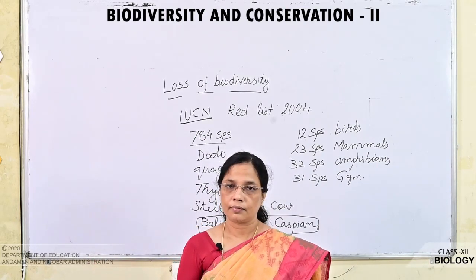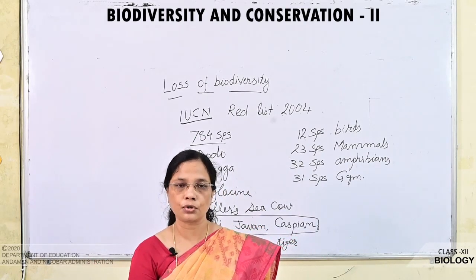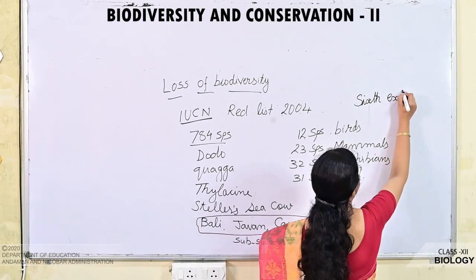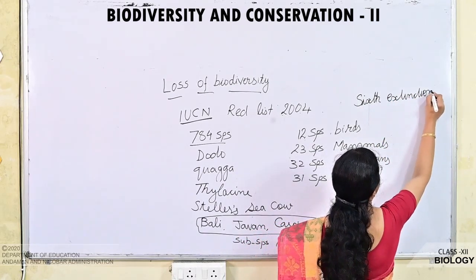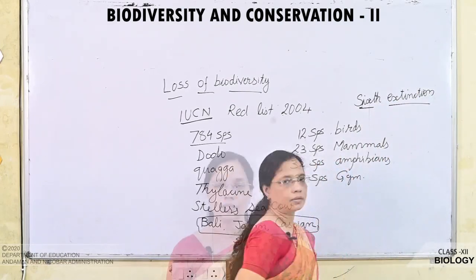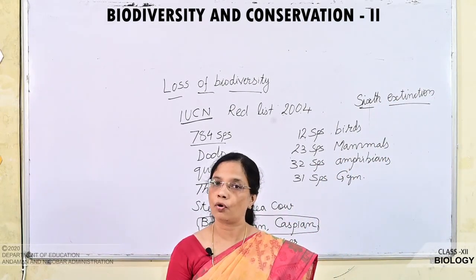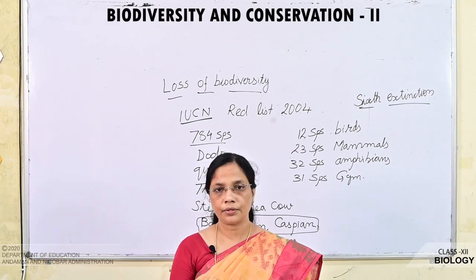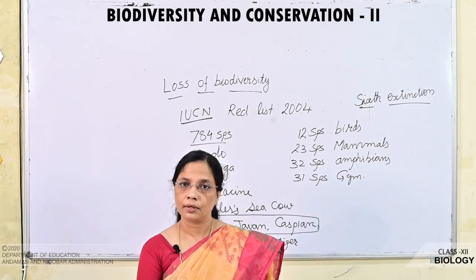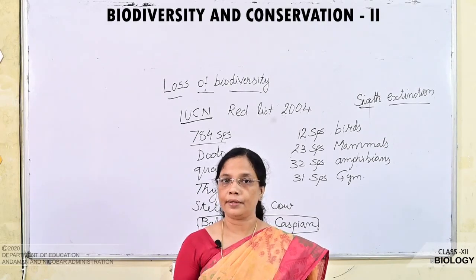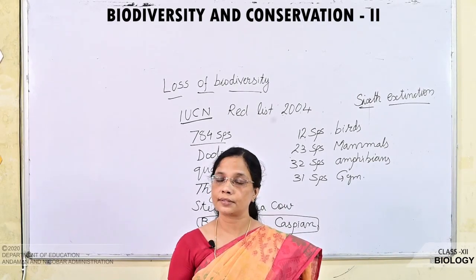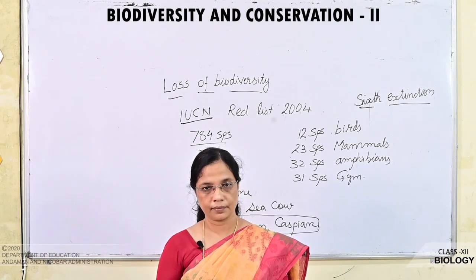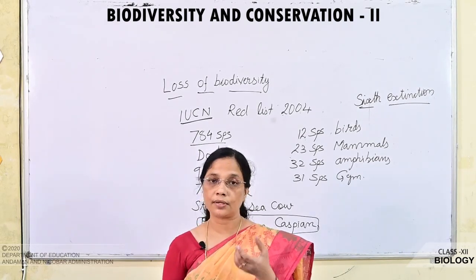The extinction presently taking place is known as the Sixth Extinction. Five episodes of mass extinction had already happened on earth before the appearance of human beings. Life forms appeared 500 million years after the formation of the earth, at a time when there were no human beings — the first lives were prokaryotic unicellular organisms.